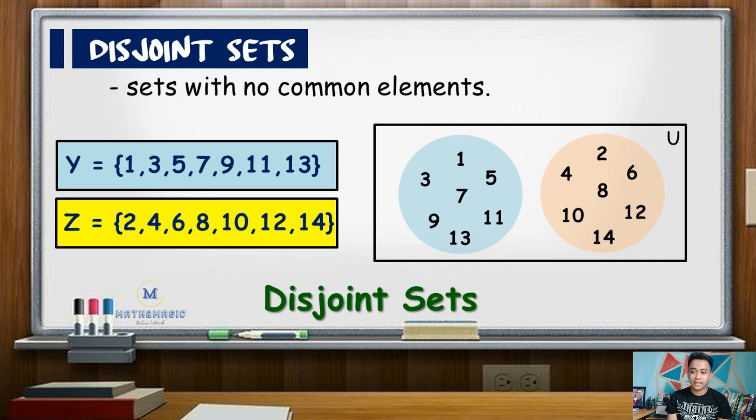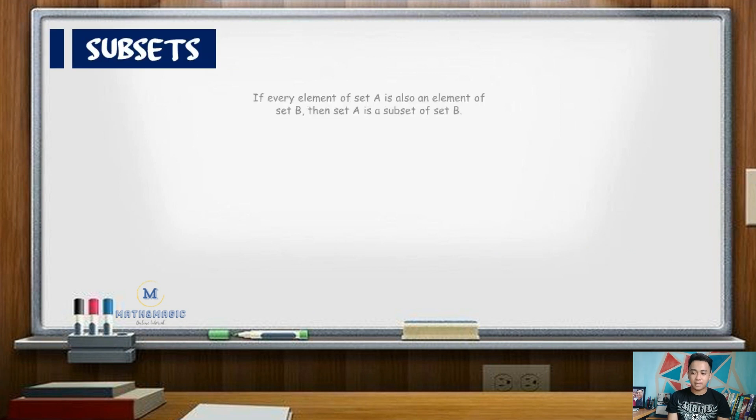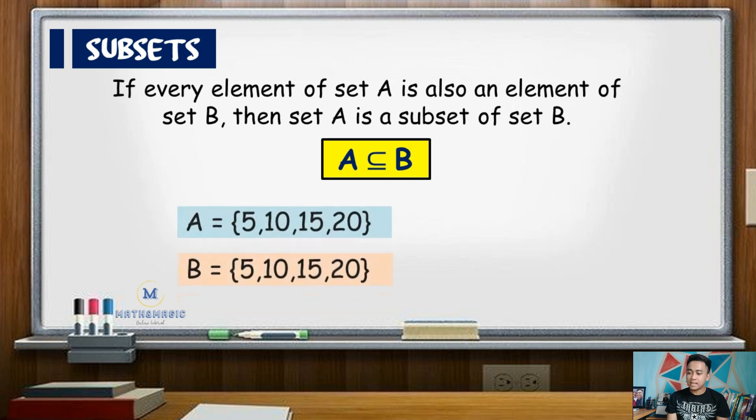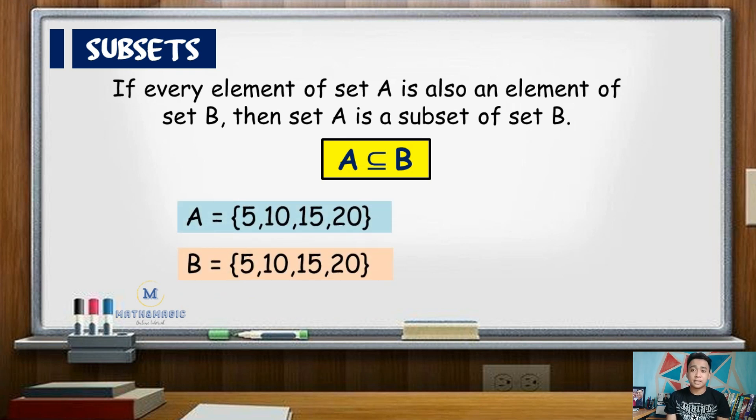Lastly, for subsets, if every element of any set, say set A, is also an element of another set, say set B, then we say that set A is a subset of set B that is denoted by A is contained in B. As an example, say set A has the elements 5, 10, 15, and 20, while set B has the elements 5, 10, 15, and 20.